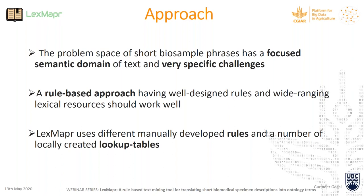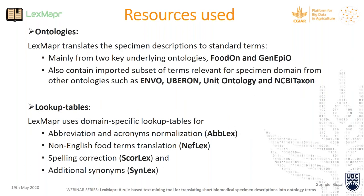We also created very domain-specific lookup tables for food biosamples. For abbreviation and acronym normalization — the data was full of loosely formed abbreviations and acronyms — we have the ABLEX lookup table. There was a lot of use of non-English food terms in the text, so we have the NEFLEX lookup table. For spelling issues and mistakes we built SCORELAX. And for additional synonyms beyond those already in the ontologies, we built SYNLEX — eventually we want all synonyms in SYNLEX to move into the ontologies.